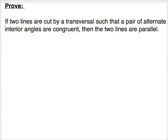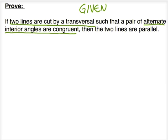Take a minute to read this if-then statement. The if part refers to given information — we're given that we have two lines cut by a transversal and alternate interior angles are congruent. The conclusion of the if-then statement is what it is we're trying to prove: we want to prove that lines are parallel.